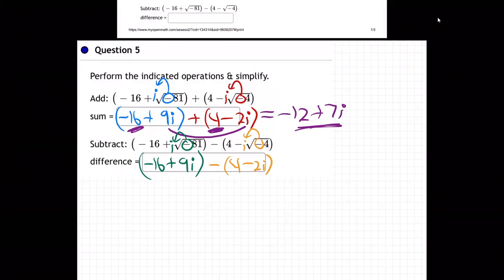How do we subtract those two numbers? Well, you guys know this isn't the first time. A negative in front of a parenthesis distributes through, doesn't it? So it becomes negative 4 plus 2i, and you drop the parentheses.